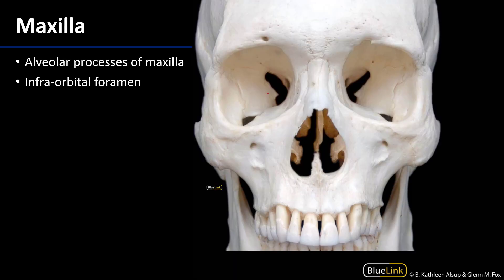Moving right along, let's take a look at the next bone of the face — the maxilla. The maxilla is the upper tooth-bearing bone of the skull. Like its counterpart the mandible, there is also an alveolar process of the maxilla, and that would be the thickened area adjacent to all of the sockets of the teeth. That's the thickening of the maxilla that supports the teeth.